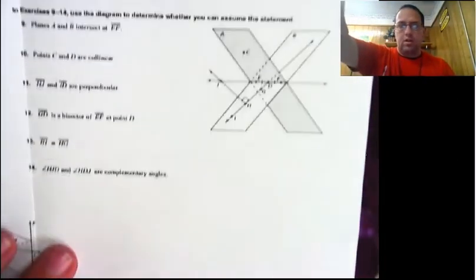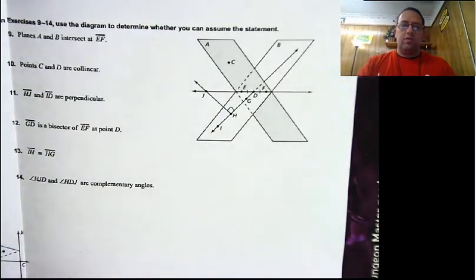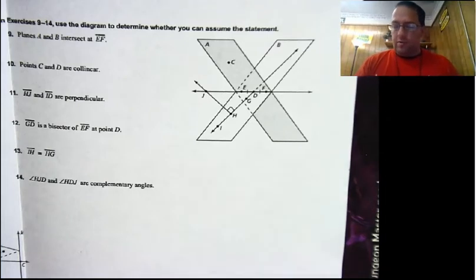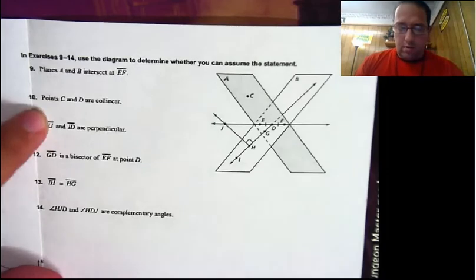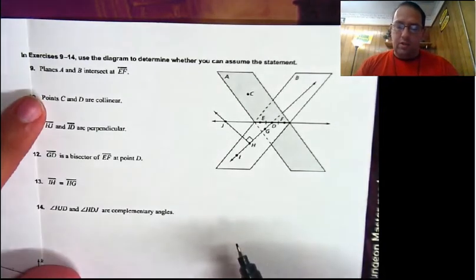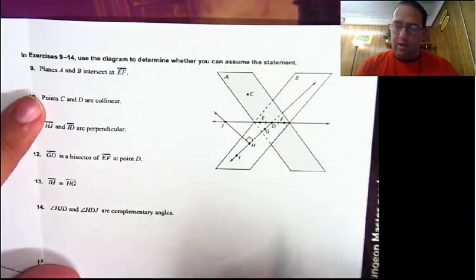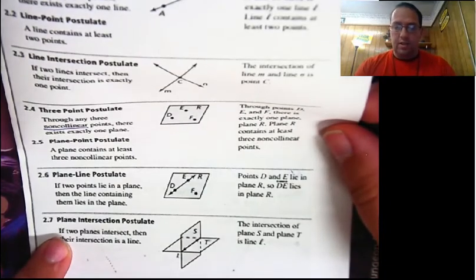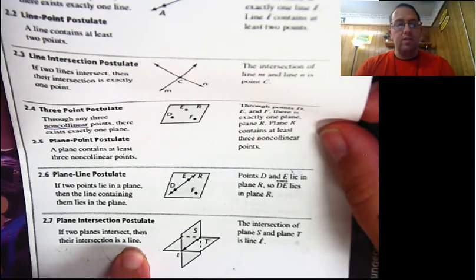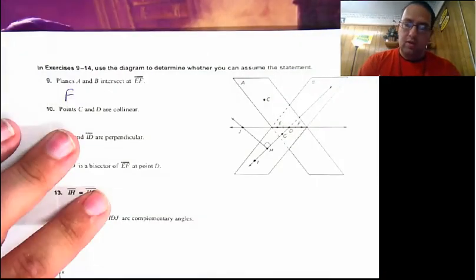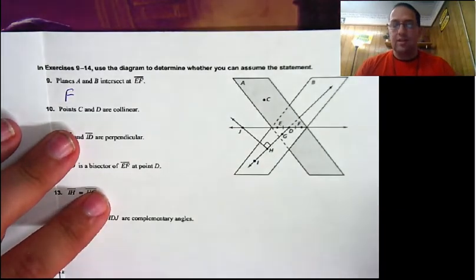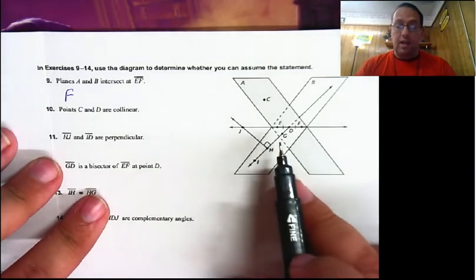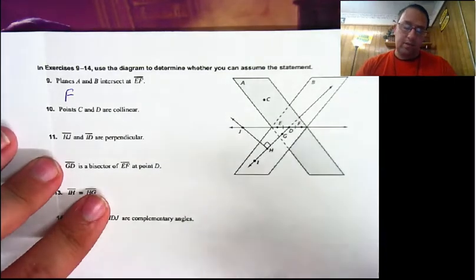Now let's look at this diagram and determine whether we can assume each statement to be true. First: planes A and B intersect at segment EF. We have plane A, plane B, and segment EF — and it does look like they intersect. However, there is one small problem: the plane-intersection postulate says that planes do not intersect at a segment. Planes intersect at a line, not a segment. So this is going to be false. If it had said line EF, then we'd be good, but it doesn't.